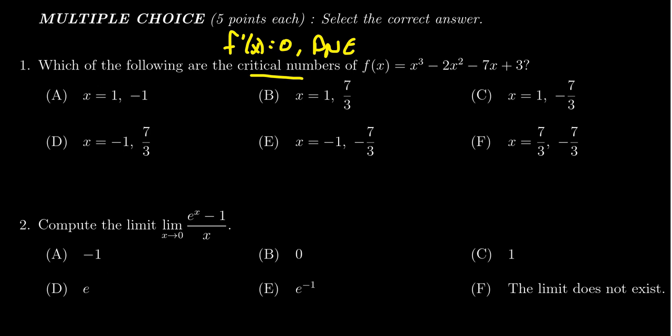So DNE means does not exist. Now, given that the function is a polynomial, the derivative will likewise be a polynomial, and so there are no points where it doesn't exist. So we need to figure out where the derivative is equal to zero.